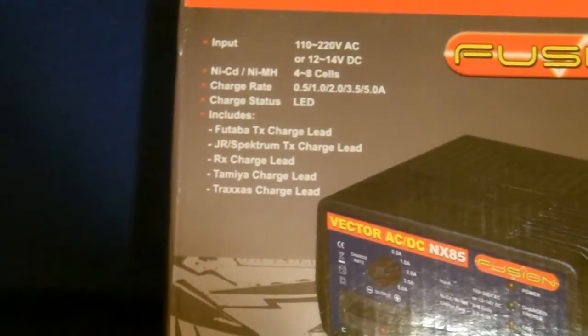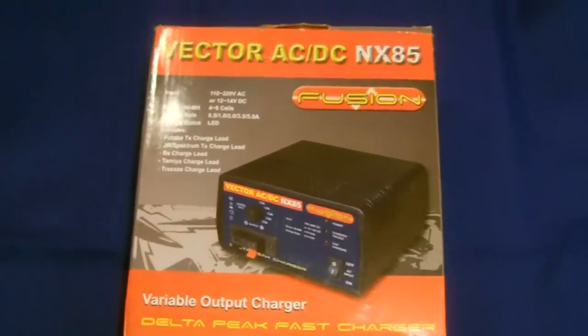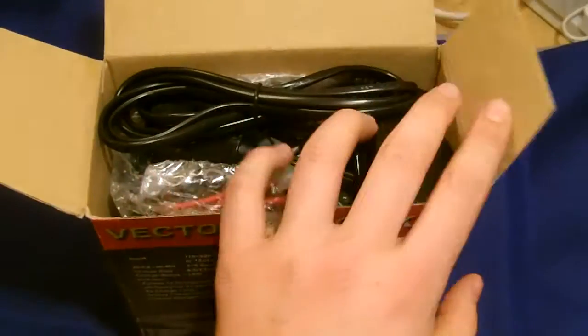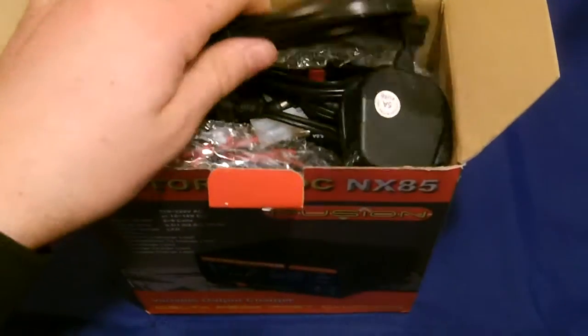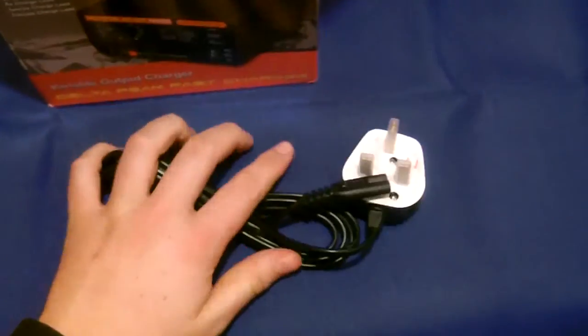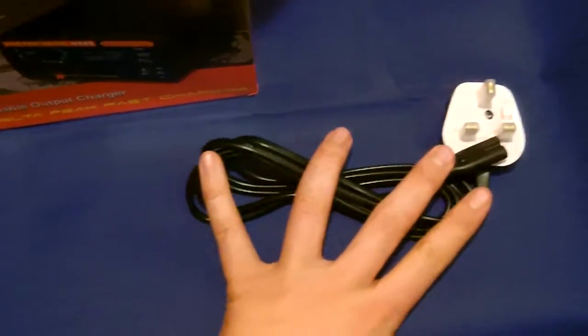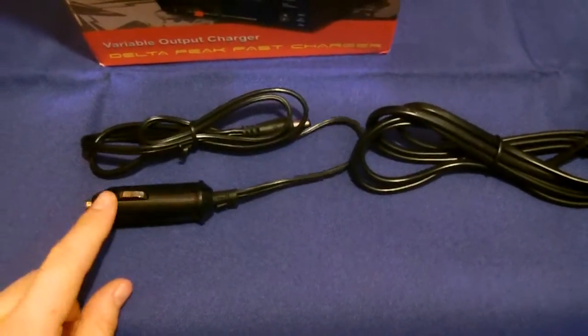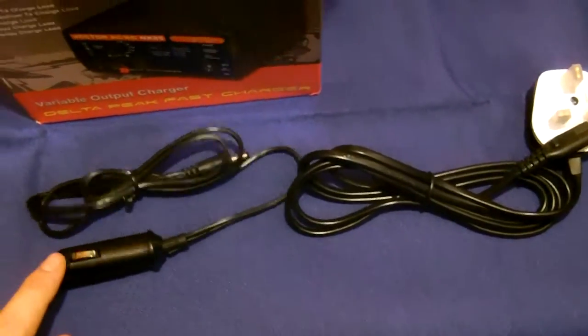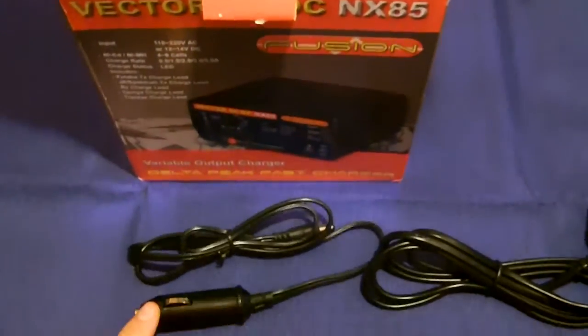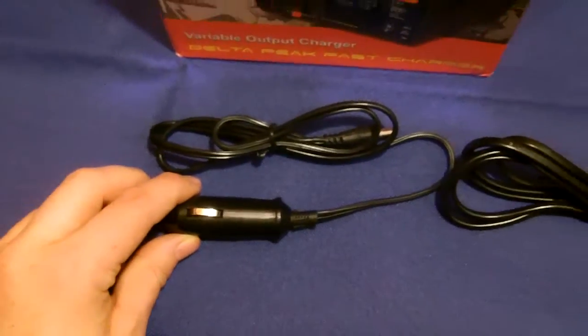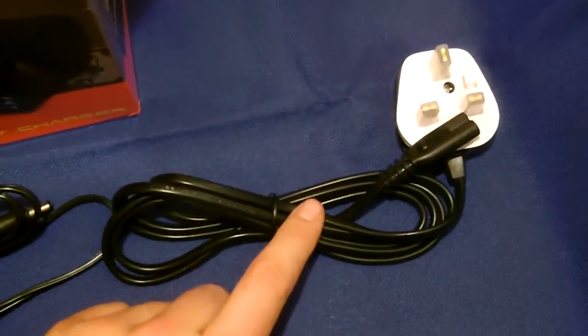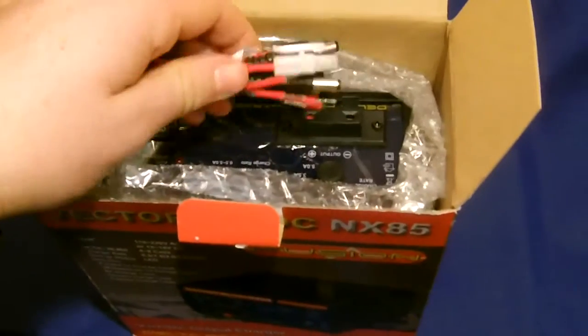So let's open the box here. First thing you see when opening the box is your two different leads so you can charge this one by the mains or you can charge this one in the car through the cigarette lighter. So you can power this charger using either the cigarette lighter whilst you're out on field which is great or you can use your 240 volt mains socket charger.